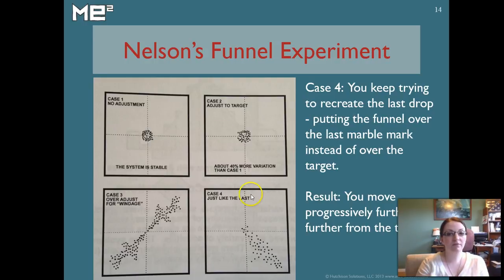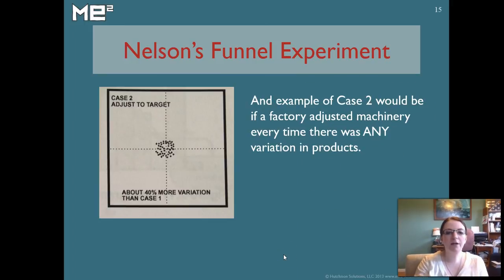In Case 4, he noticed that people, instead of trying to aim for the target, started aiming for their last drop. So each time they dropped something here, which was pretty close to the target, instead of re-aiming for the very center, they'd aim for the last dot and they'd get a little further off. And then they'd aim for that dot and they'd get a little further off and a little further off until they got progressively farther and farther away from the target.